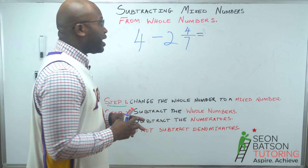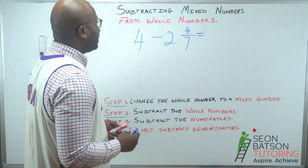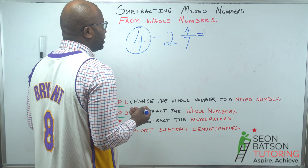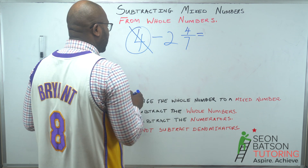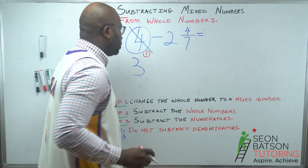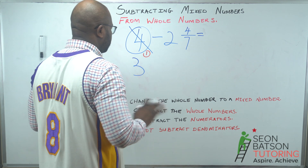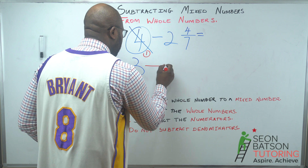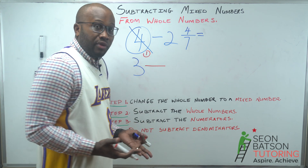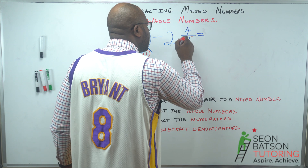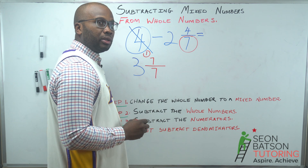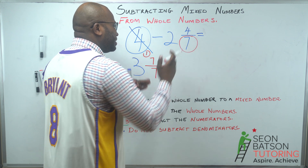Welcome back! Step one — we change our whole number to a mixed number. We take one from 4, so 3 is left. That one we borrowed will help us get the fractional part of the mixed number. Since this denominator is seven, our fractional part becomes seven over seven. We choose seven over seven because we want the denominators to be the same.